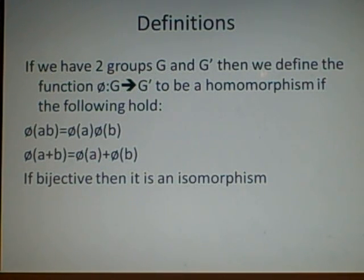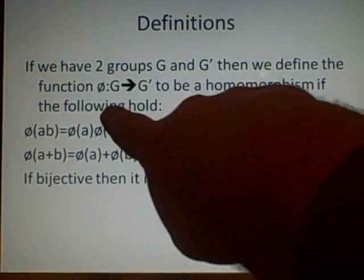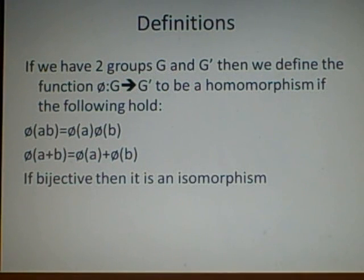So it can go from the reals to reals, which is usually the most general case, but here we're going from g to g prime, and they are our two groups, and we've got this function phi, which is mapping between g and g prime.